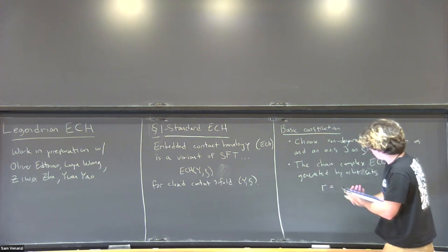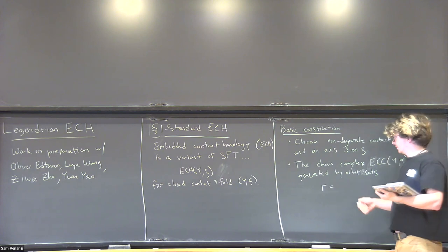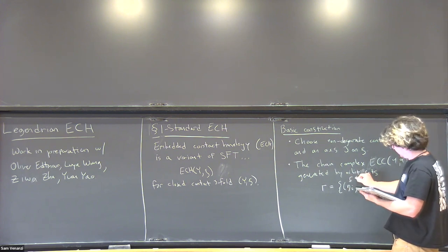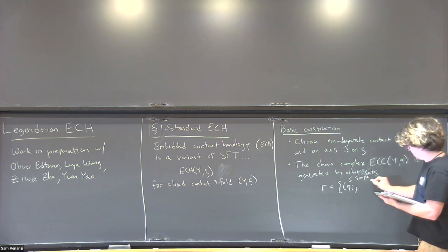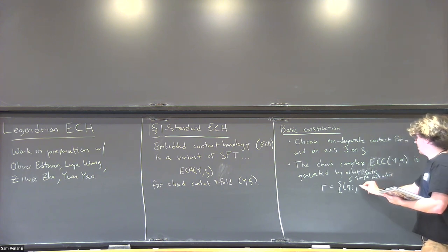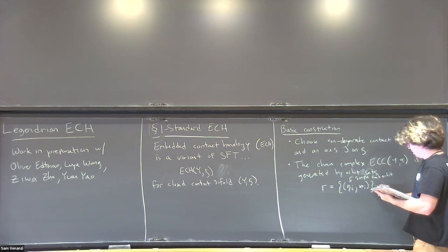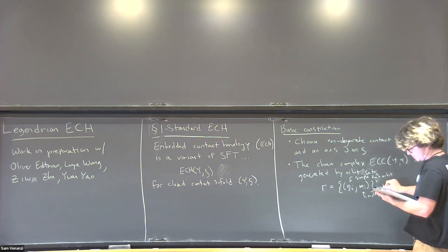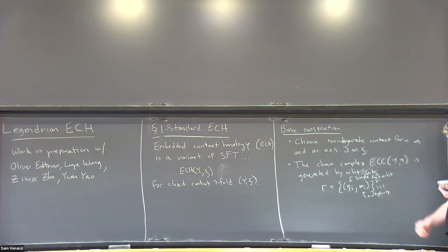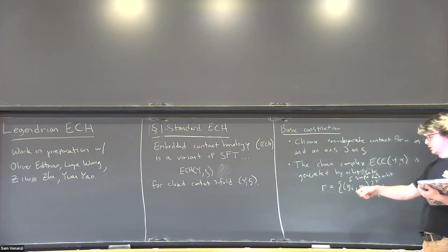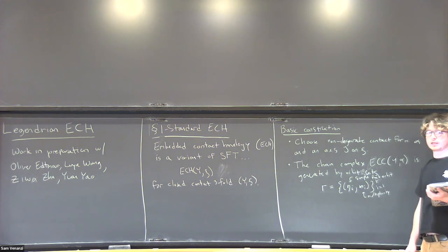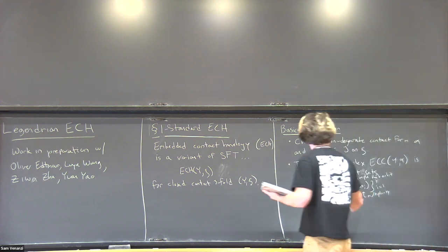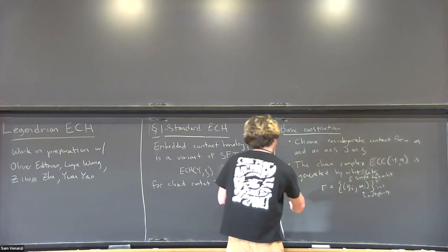An orbit set is a set of pairs of simple Reeb orbits—simple means embedded—and a multiplicity m_i, which is some positive integer. These multiplicities have to satisfy some properties: all of these orbits have to be good, and hyperbolic orbits are only allowed to have multiplicity one. So there are certain constraints on these orbit sets.